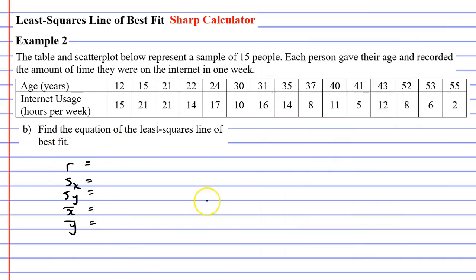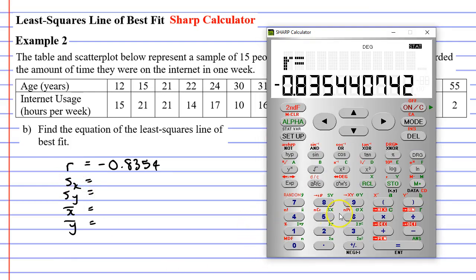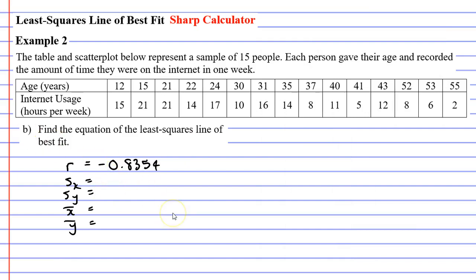So we need to find R, S of x, S of y, x with a bar above it, and y with a bar above it. The beauty of this is that your calculator will find these values for you. We already had R from before: negative 0.8354. So we'll find the standard deviation of x. Now, to be more specific, it's the sample standard deviation of x. We can actually see it on the calculator. Here's Sx, or the sample standard deviation of x. So I'm just going to go alpha 5 to find Sx, and it gives me 13.5882.